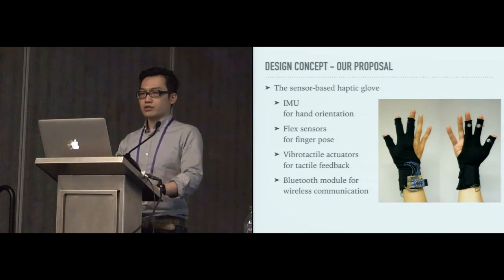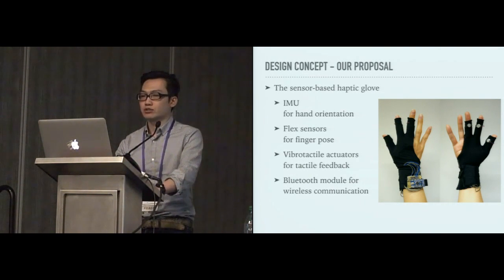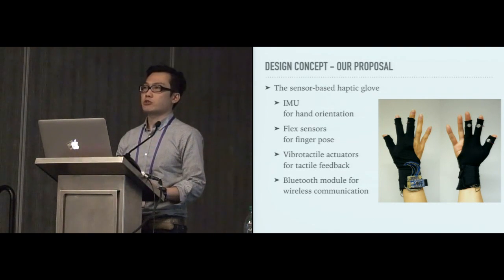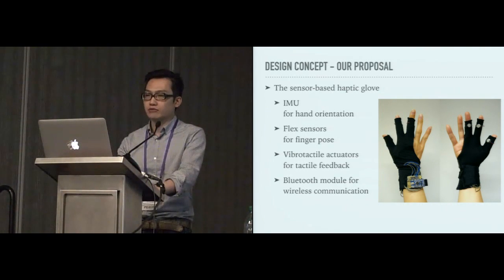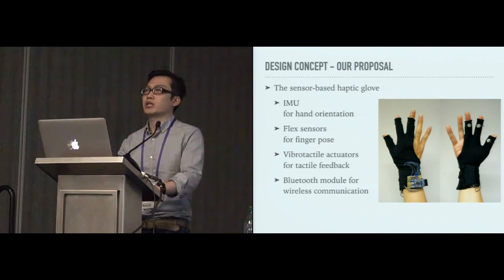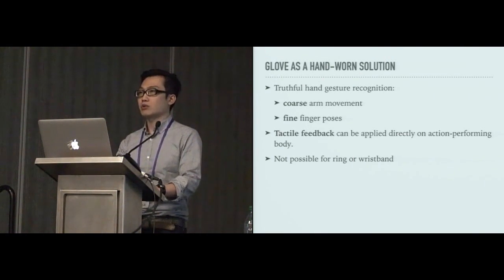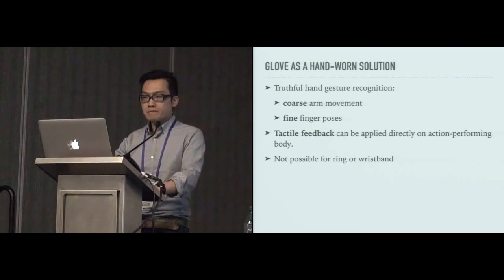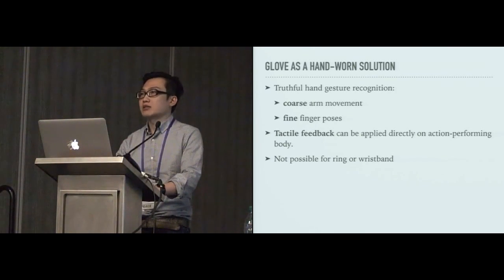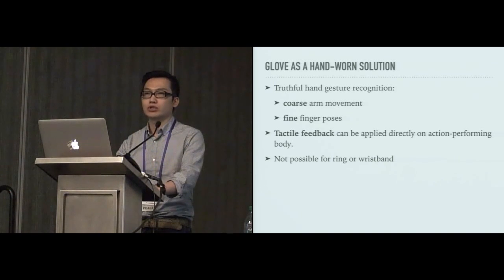Our sensor-based glove uses inertial measurement unit for tracking hand orientation, and also on the fingers, we have flex sensors to track the finger pose. At the same time, we also have vibrotactile actuators for providing tactile feedback on the fingers, and also Bluetooth module for wireless communication with the smart glasses. The distributed sensors on the hand enable tracking both coarse arm movement and also fine finger gestures. Additionally, the tactile feedback can be applied directly on the action-performing body. Both of these advantages are not possible on other form factors, such as rings or wristbands.